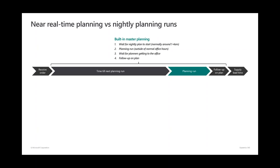When we think about MRP planning at the moment, we have a very long waiting time during the day until the next planning run is executed. Normally the execution happens around 1 a.m. to 4 a.m. depending on the time zone. The planner comes back to the office at 8 or 9 a.m. and starts working, receiving orders — but you need to wait until the next MRP run is executed. There's a very long lead time until you see the result.